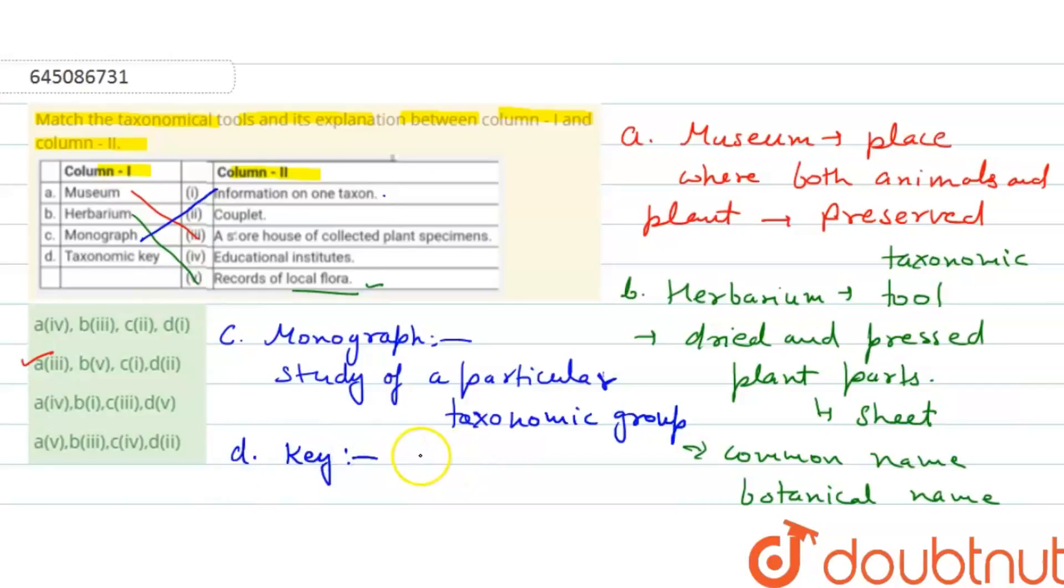It identifies various taxa on the basis of similarities and dissimilarities. Taxonomic keys are generally based on a pair of contrasting characters.